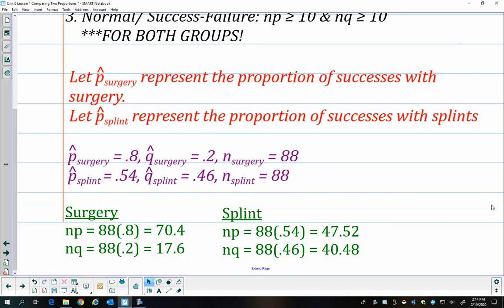And so we can calculate np and nq for each. And so that means that close to 70 people in the surgery were successful and 47 or 48 people in the splint category were successful. And all these numbers are greater than or equal to 10. So the important thing is that you're checking np and nq for both groups.